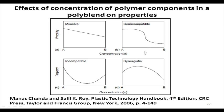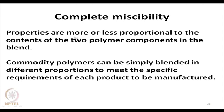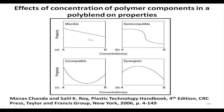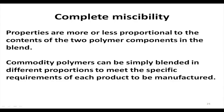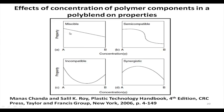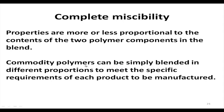The previous figure I showed is broken into four different curves, which completely explains the effects of concentration of polymer components on the properties of the polymer blends. In case of complete miscibility, properties are more or less proportional to the contents of the two polymer components in the blend. This kind of feature is found in commodity polymers, which are blended in different proportions to meet specific requirements of each product to be manufactured.